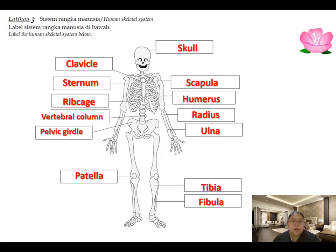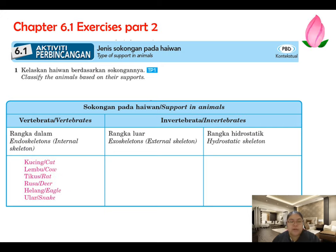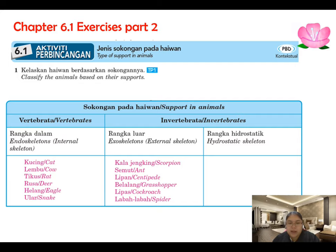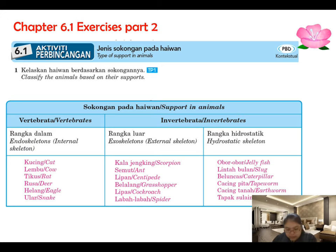Now continuing to Part 2 — fill in the blank. For endoskeleton vertebrates, examples are: cats, cow, rat, deer, eagle, and snake. For exoskeleton, examples are: scorpion, ants, centipede, grasshopper, crab, and spider. For hydrostatic skeleton: jellyfish, slug, caterpillar, earthworm, and starfish. Mark corrections with a red pen so you know what you understand or not.